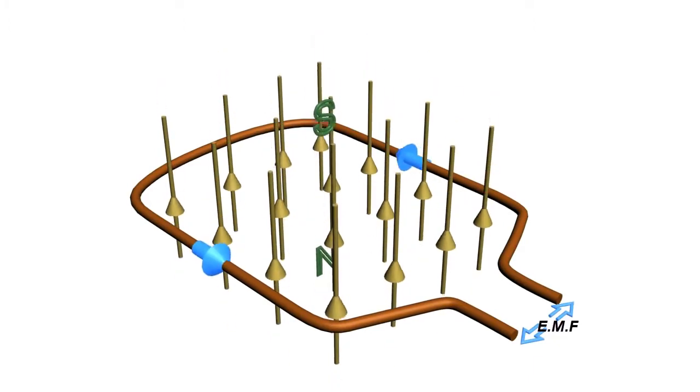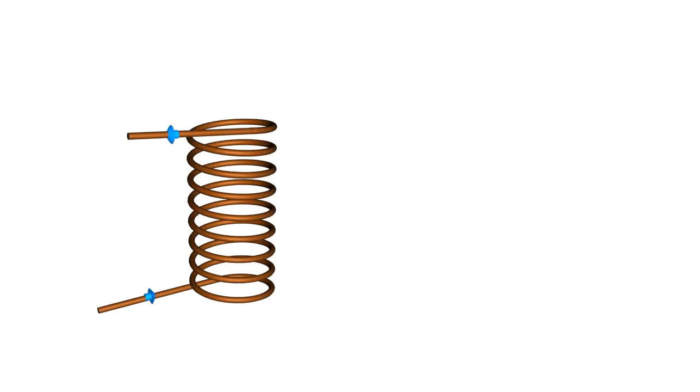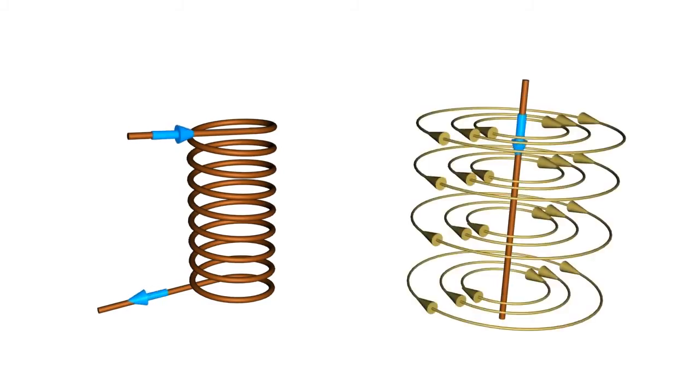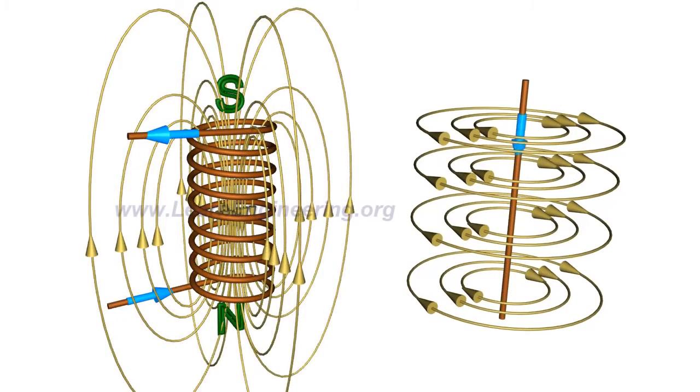Such a fluctuating magnetic field can easily be produced by a coil and an alternating EMF system. A current-carrying conductor produces a magnetic field around it. The magnetic field produced by a coil will be as shown in the figure.